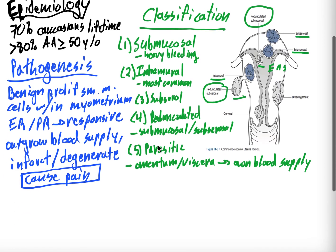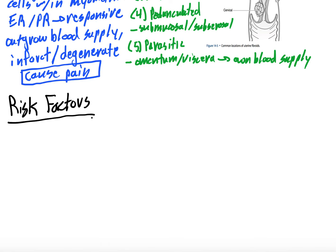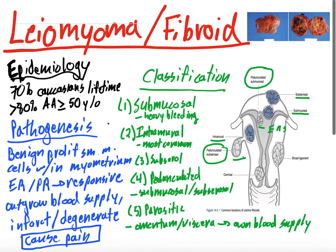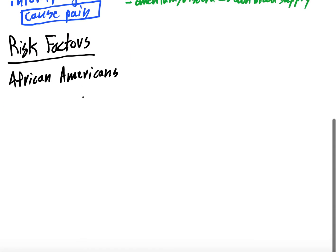Now let's do risk factors. Risk factors are more important in leiomyomas than in endometrial polyps and adenomyosis because there are a lot of risk factors and protective factors. One of the risk factors, as we talked about in epidemiology, is being African American — their incidence by age 50 is more than 80%. So one of the risk factors is being African American.